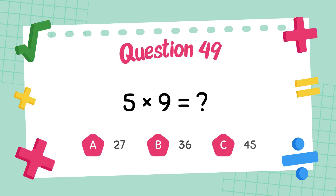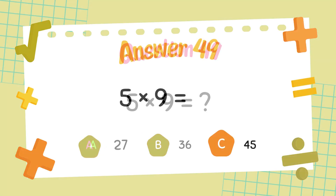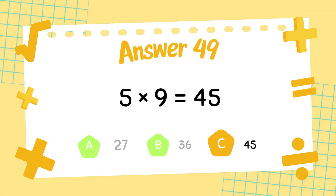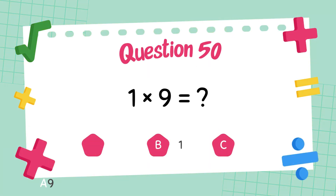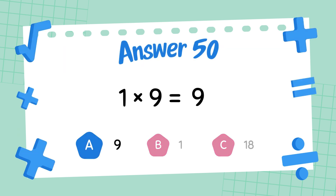What is 5 times 9? The answer is 45. What is 1 times 9? The answer is 9.